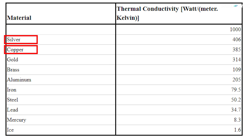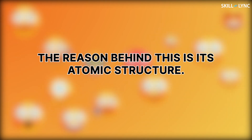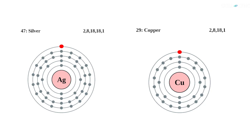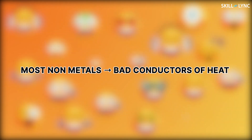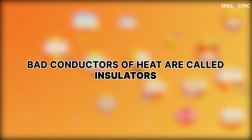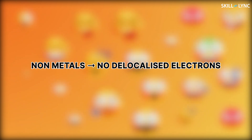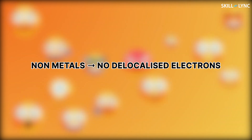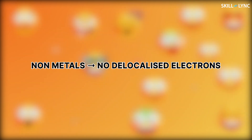Silver has a very high thermal conductivity value, much higher than copper. The reason behind this is its atomic structure — the electron in its outermost shell is much farther than the electron in copper. Because of this, it can move much more freely and conduct heat and electricity much better than copper. Most non-metals are bad conductors of heat, with few exceptions, and these bad conductors are called insulators. The reason is the absence of delocalized electrons.